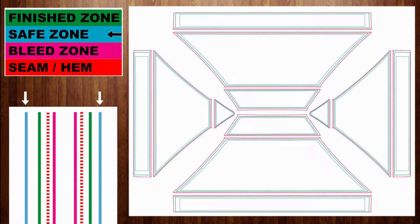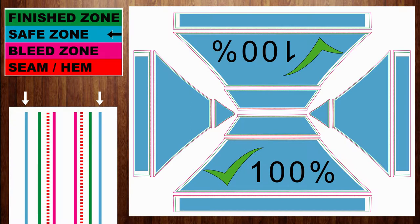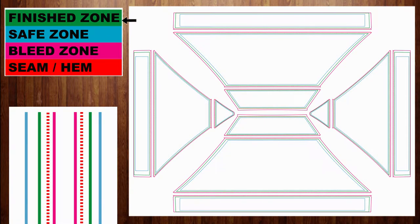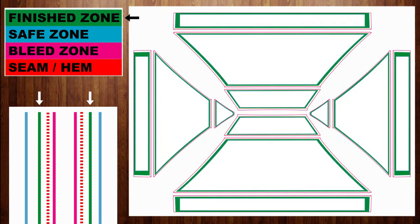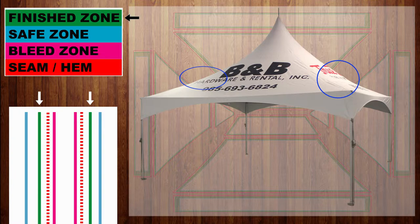The blue line encompasses the safe zone. This zone is 100% guaranteed to show any text or images placed within it. The green line shows the finished zone. Anything in the finished zone can be seen once production is finished. Due to the contours of the piece once it has been made, items in the finished zone may or may not have the best visibility but can be seen.